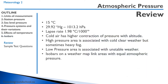Remember, we use a standard atmosphere: 15 degrees Celsius, atmospheric pressure of 29.92 inches of mercury or 1,013.2 hectopascals, and a lapse rate of 1.98 degrees Celsius per thousand feet. Cold air has a higher contraction of pressure with altitude than warm air. High pressure areas are associated with cold, clear weather — but sometimes heavy fog. Low pressure areas are associated with unstable weather. Isobars on a weather map link areas with equal atmospheric pressure.